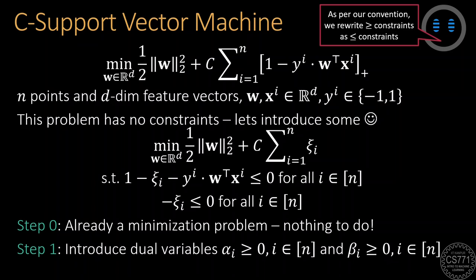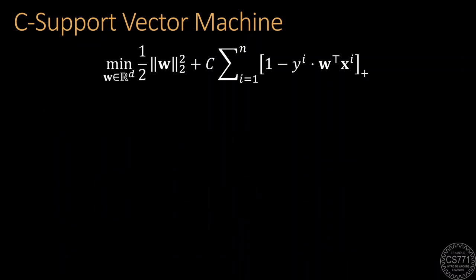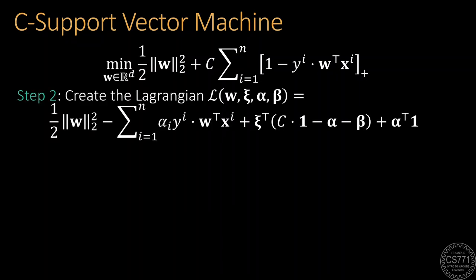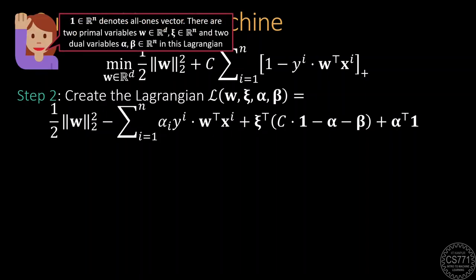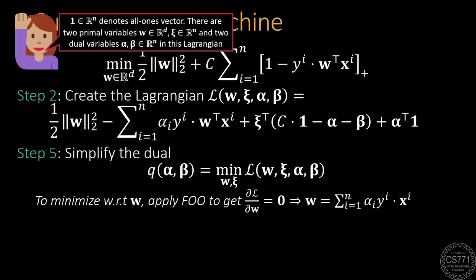There is no more processing to be done, so we can just go ahead and introduce dual variables for the two N constraints that we have. Notice that all of these two N dual variables will themselves be constrained to be non-negative. Next, we can go ahead and create the Lagrangian, which takes four inputs, which are all vector variables. These are two primal variables, W and Xi, and two dual variables, alpha and beta. Let us now simplify this dual. To minimize with respect to W, setting the partial derivatives of the Lagrangian to zero with respect to W gives us an expression or formula for the model W in terms of alpha and the training features and labels. Specifically, we see that W is equal to the summation of alpha i times y i times x i. Take a moment to memorize this expression. It will come in handy later.